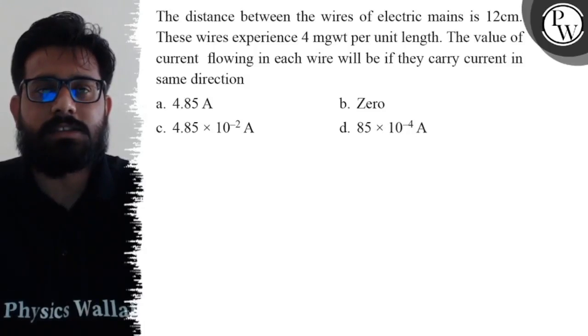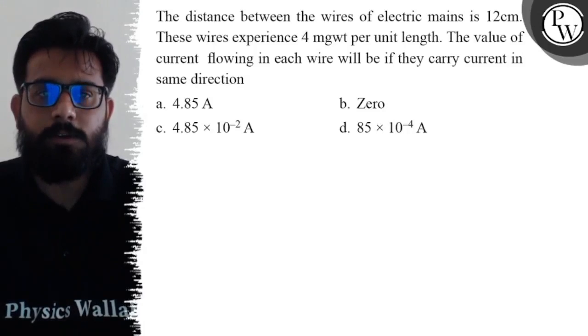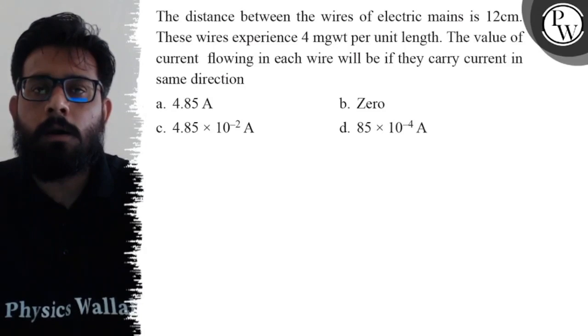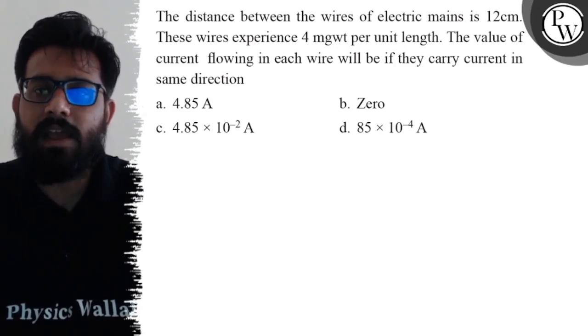Hello everyone, let's see the question. The distance between the wires of electric mains is 12 centimeters. These wires experience a force of 4 milligram-weight per unit length. The value of the current flowing in each wire will be if they carry current in the same direction.